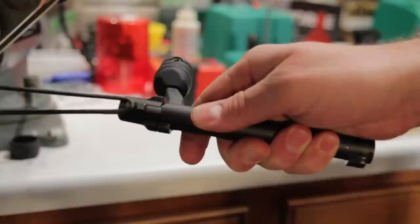You can use a string, 550 cord. I use a loop of 550 cord around my bench vise handle, and you hook the end of the firing pin assembly under it.